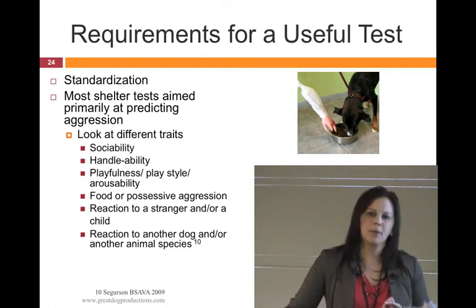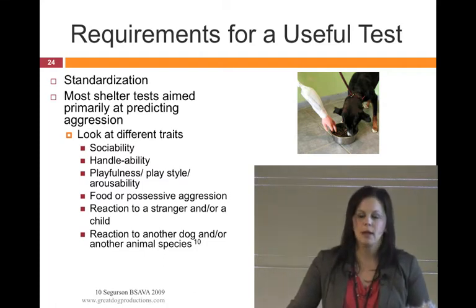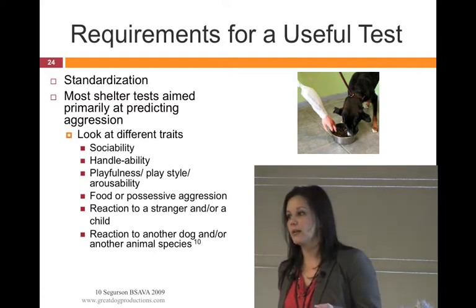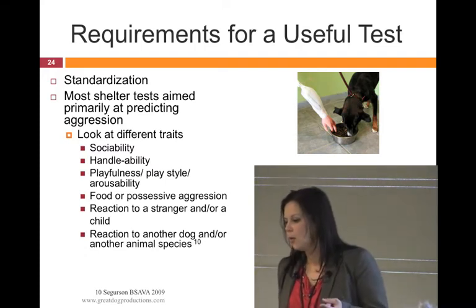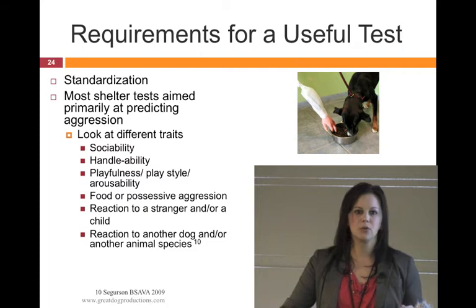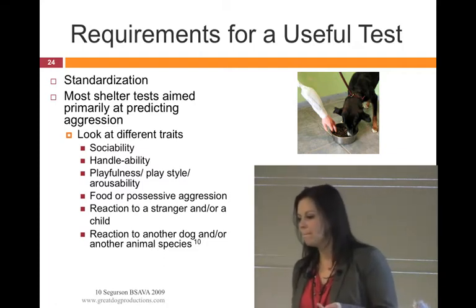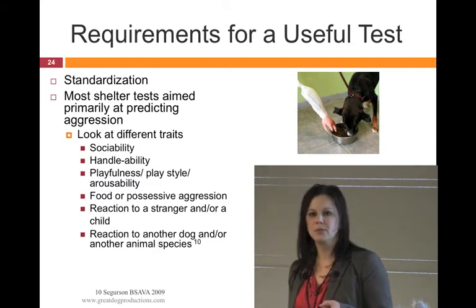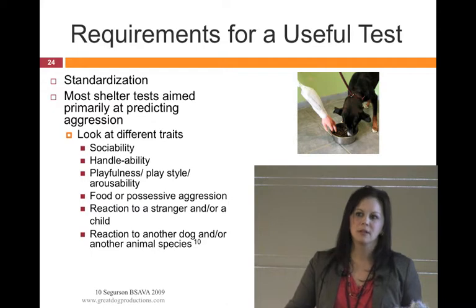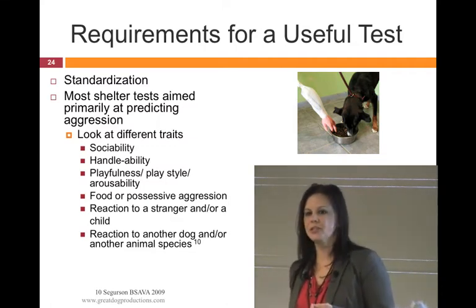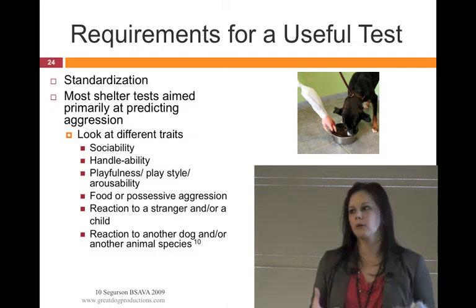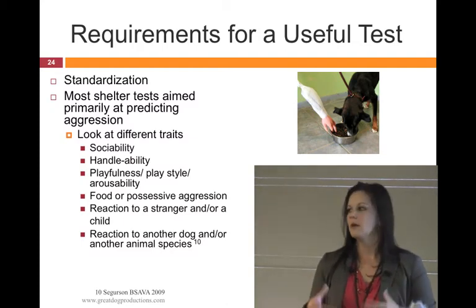Most shelters are primarily looking at aggression — who's going to be dangerous and who's not. Ideally we'd look at multiple traits: sociability, handleability, play style, food or possessive aggression, reaction to strangers or children, reaction to other dogs, reaction to other species. All of these appear in some form as subtests in various behavior assessments, though not every test has every one of these.